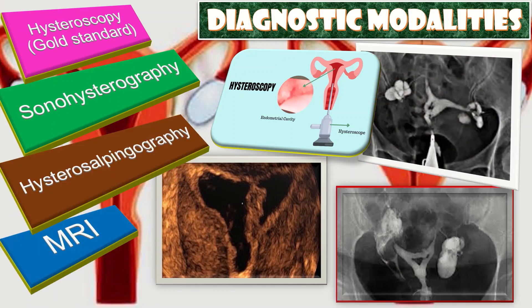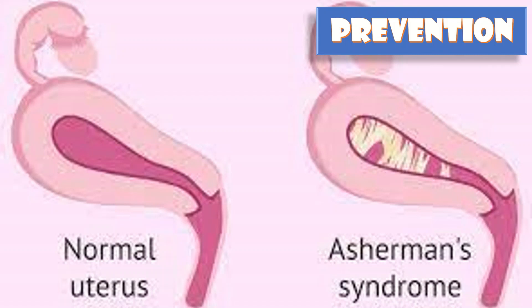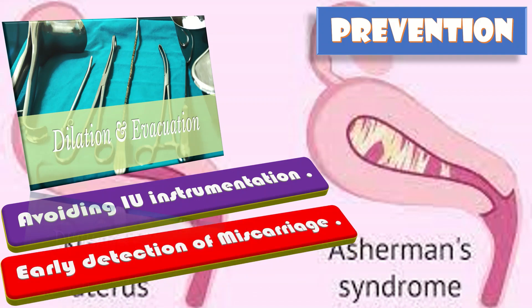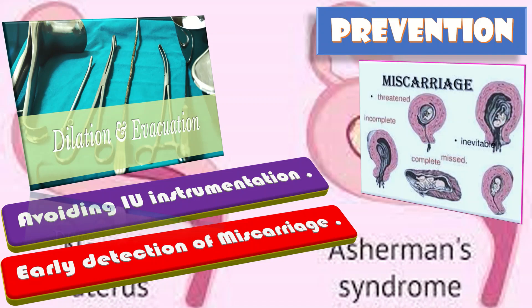How to prevent Asherman syndrome? That is by avoiding intrauterine instrumentation — preferably use medical methods for termination of pregnancy like misoprostol. Secondly, early detection of miscarriage and immediate evacuation following fetal demise can reduce the incidence of adhesion formation. There is no evidence of decreased risk with MVA.